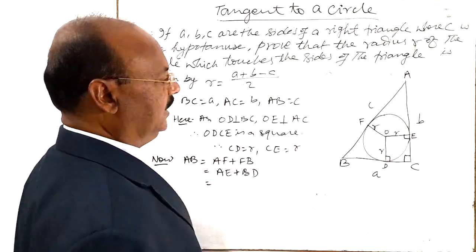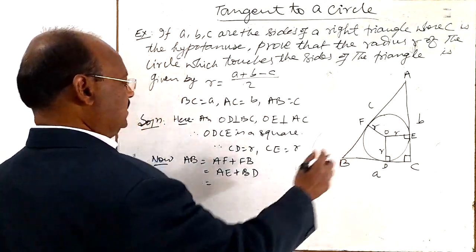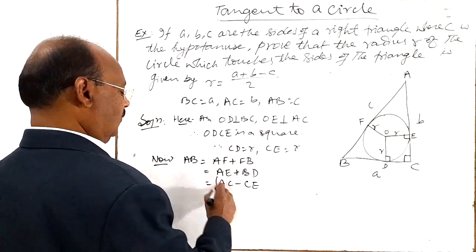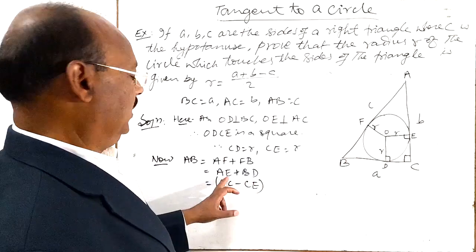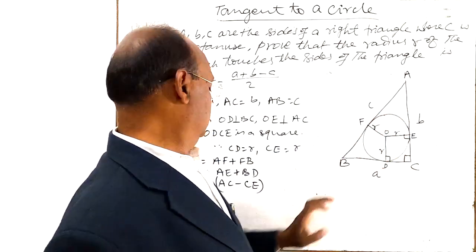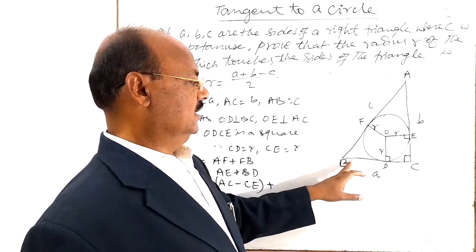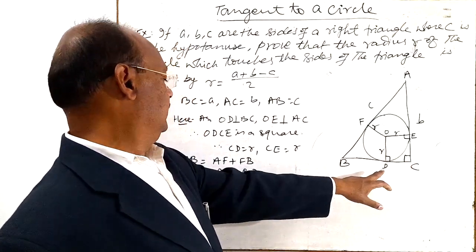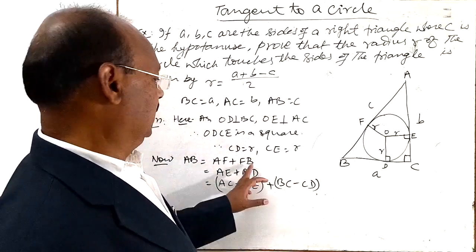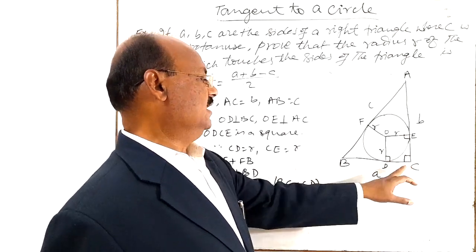And this is equal to AE. AE can be written as AC minus CE or EC. So this can be written as AC minus CE. We will get AE. Similarly, in place of BD, BD can be written as BC minus CD. See the figure. BD is BC minus CD.